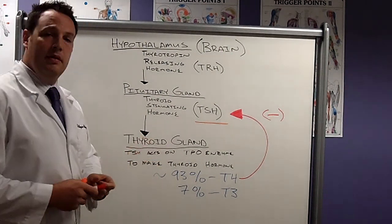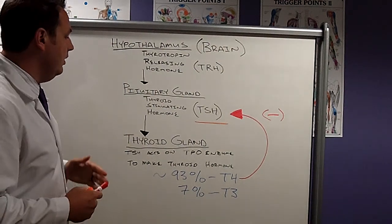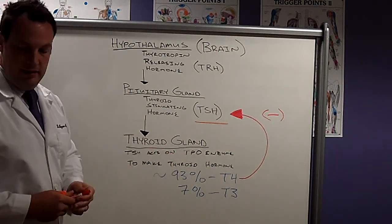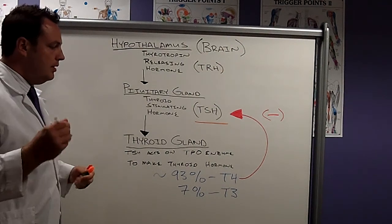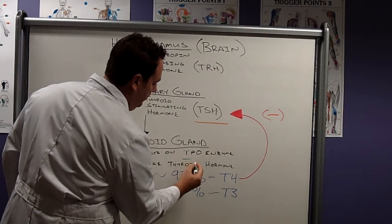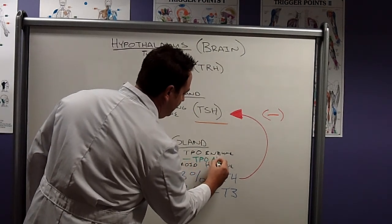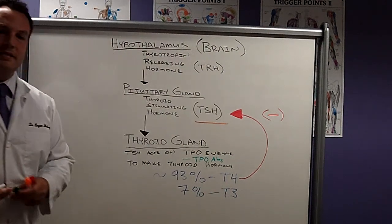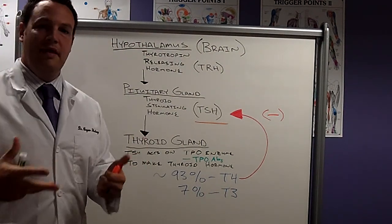Most of the time that we're finding, 80 to 90% of the time, we're looking at an immune attack on this thyroid peroxidase enzyme. This is where another test comes in called TPO antibodies. So your body is actually attacking the enzyme that's putting together the thyroid hormone.